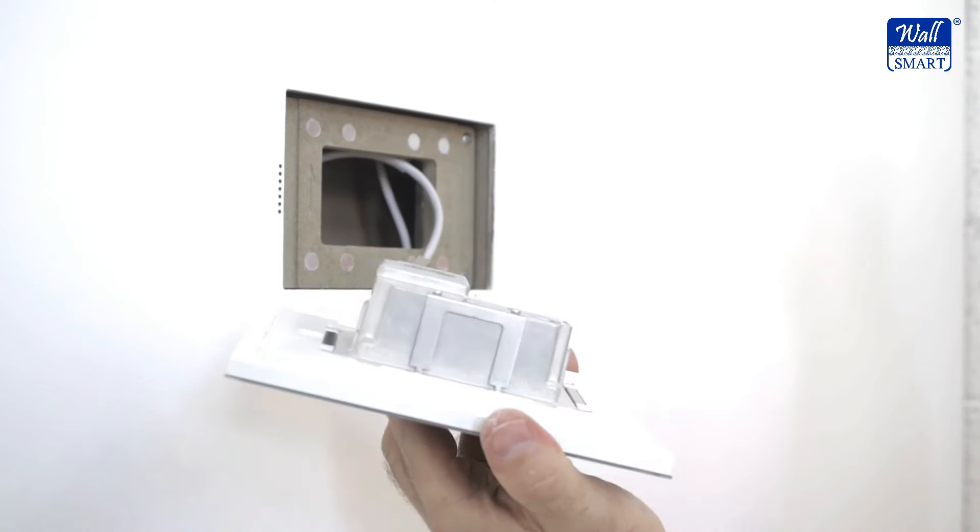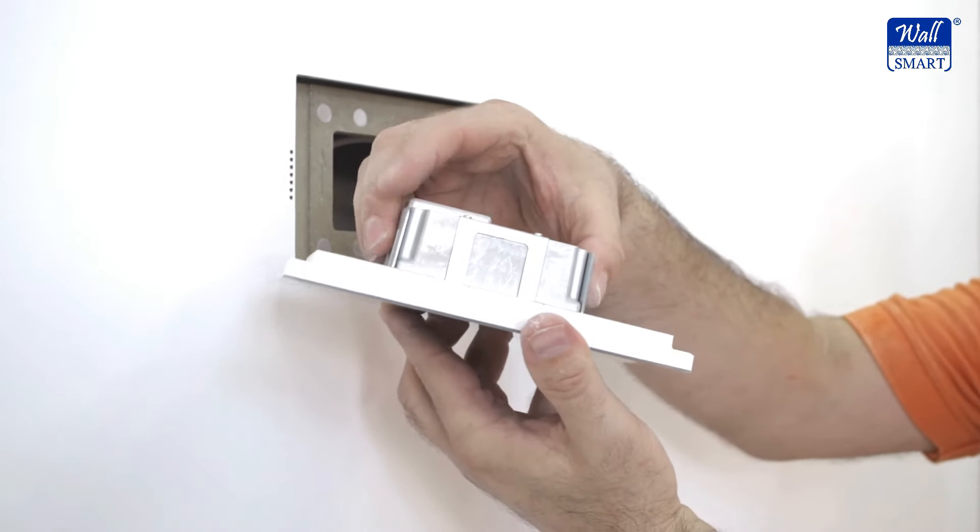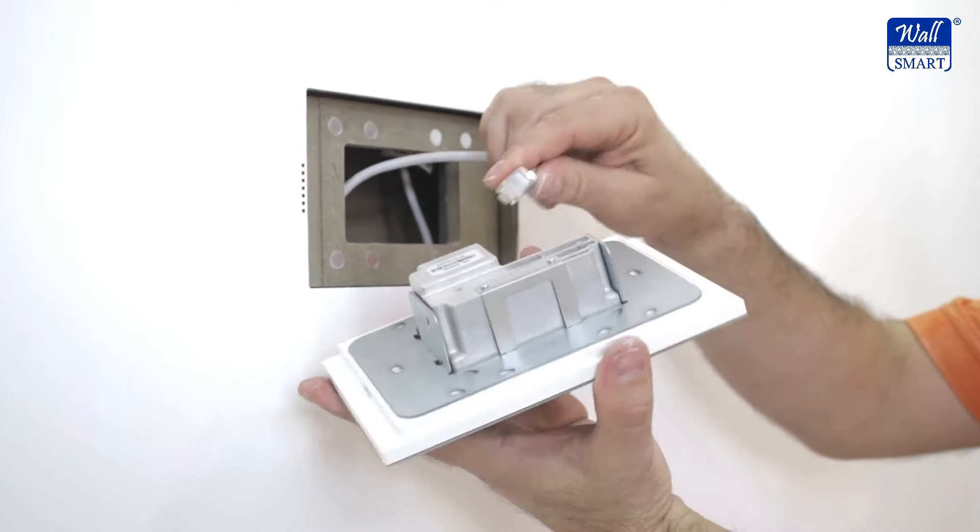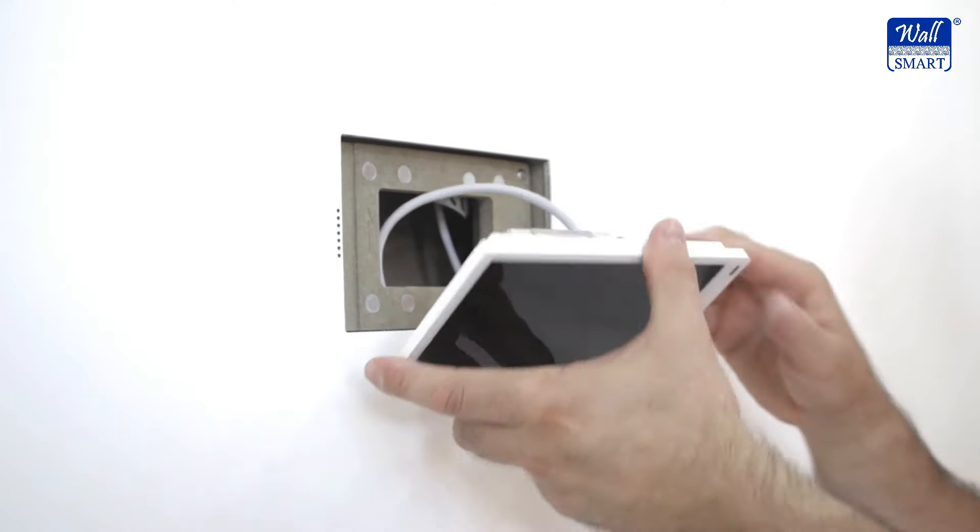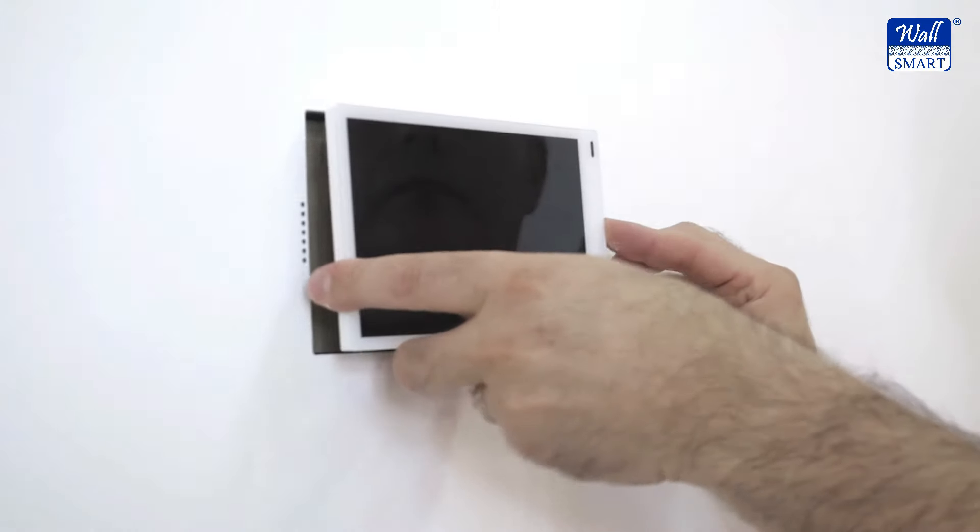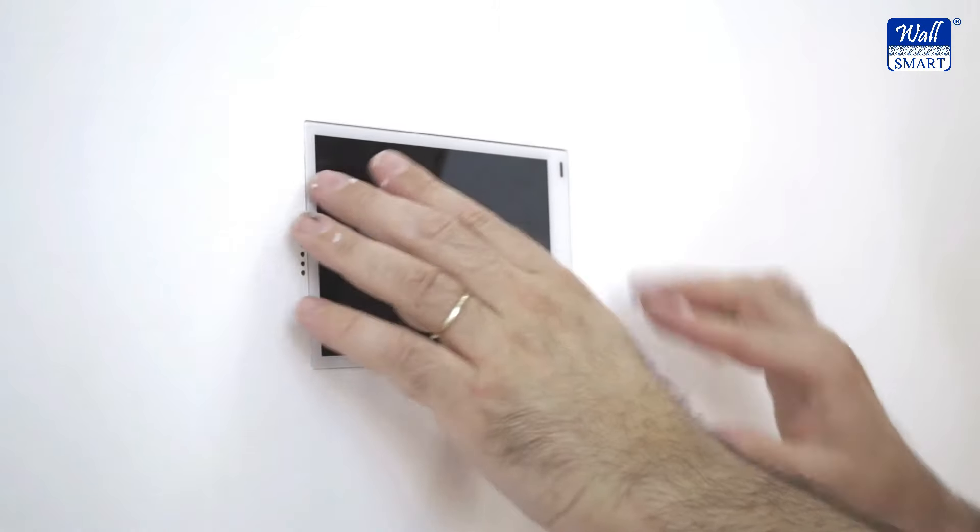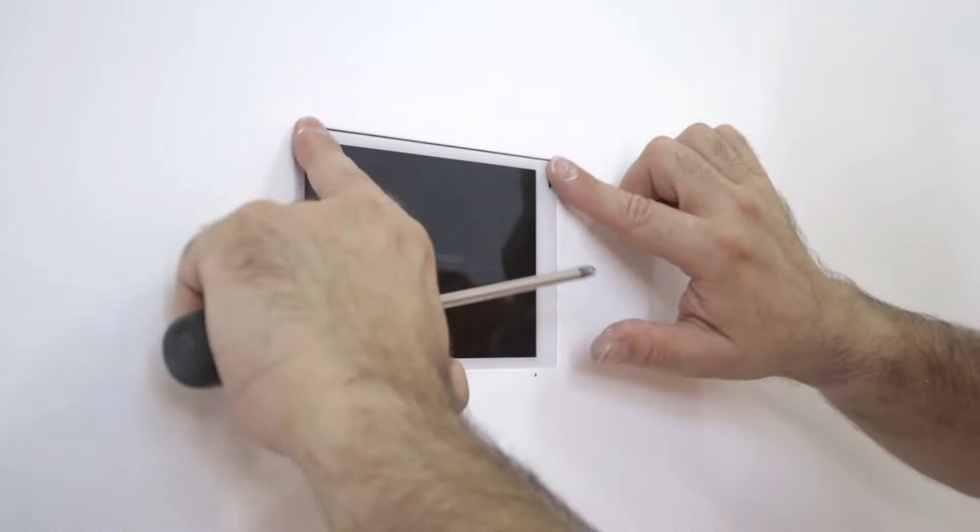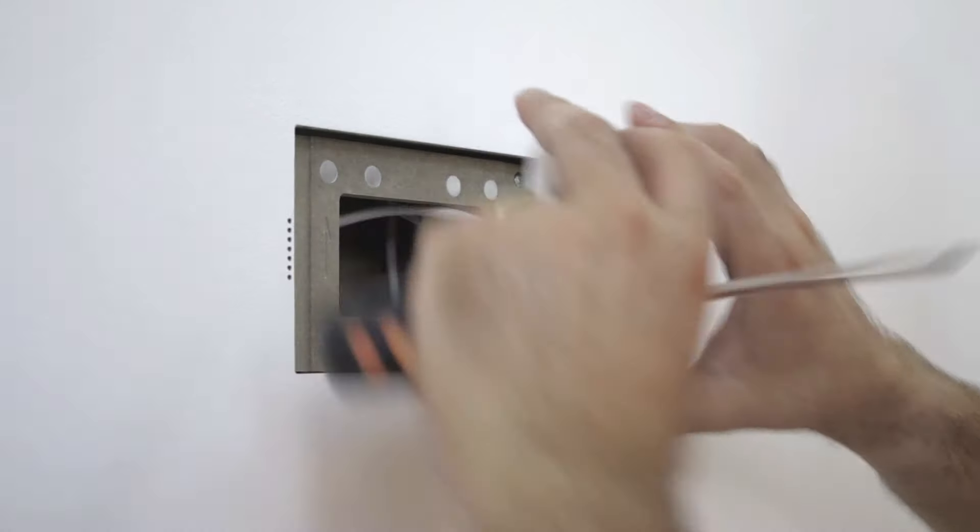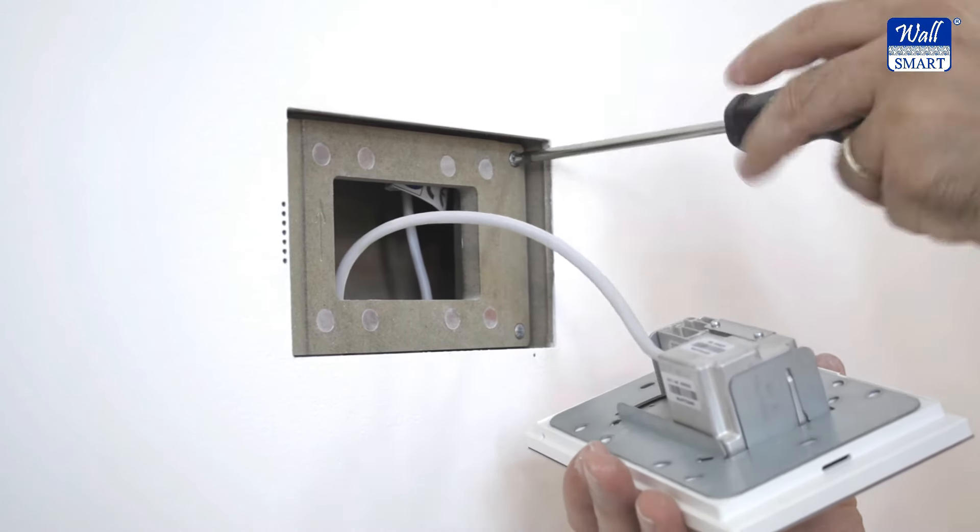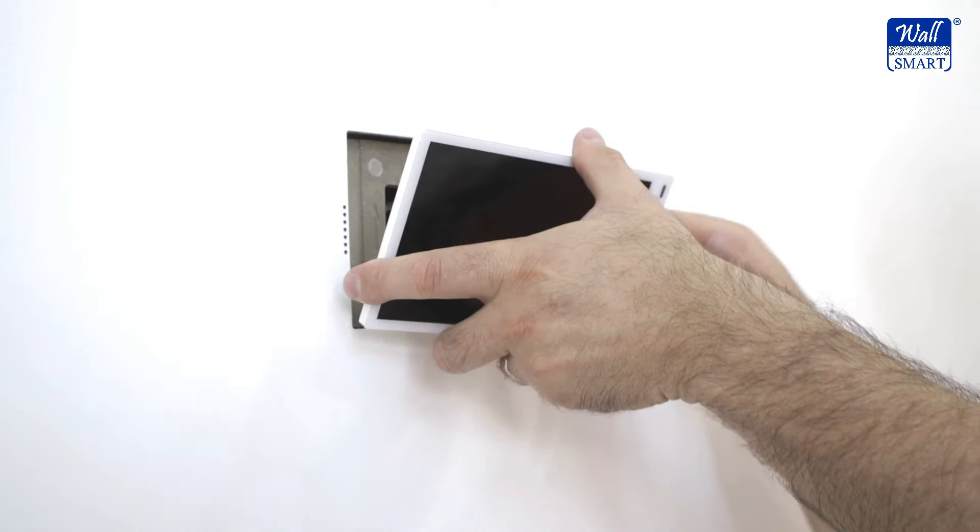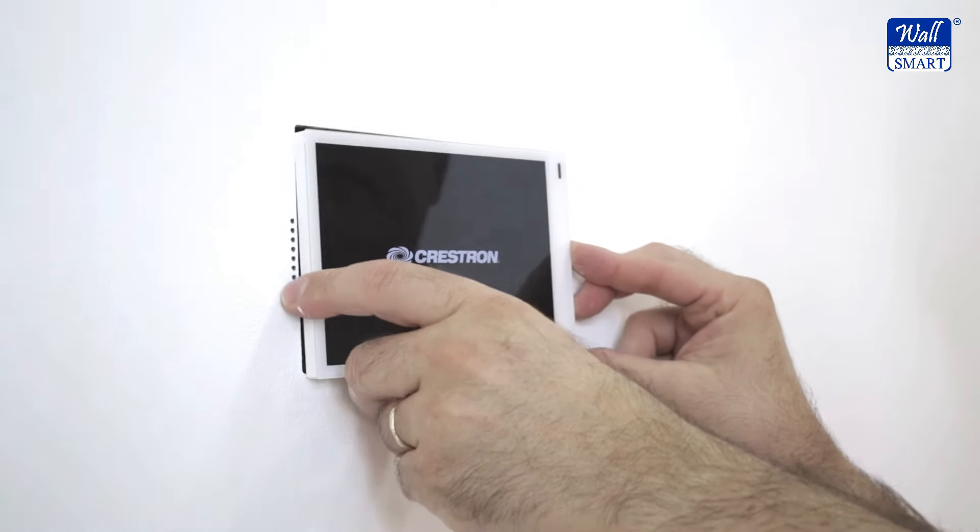Attach the device adapter plate to the device. Now we will insert the device. Calibrate the mount depth. Connect and insert the device.